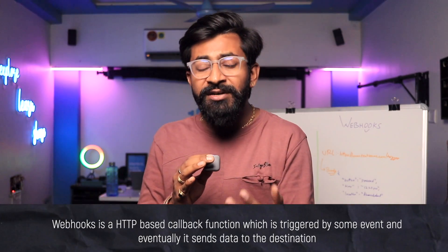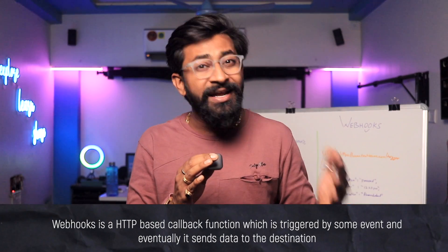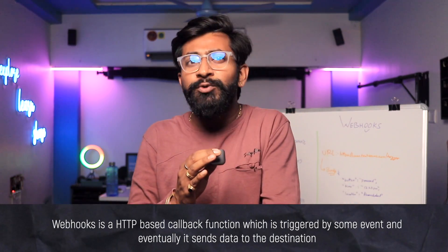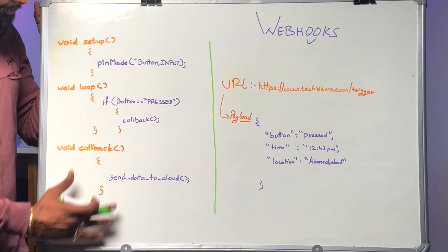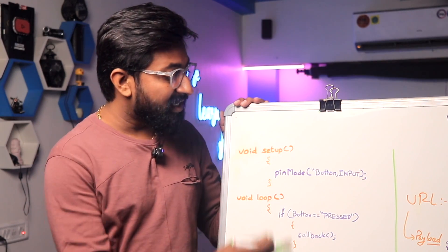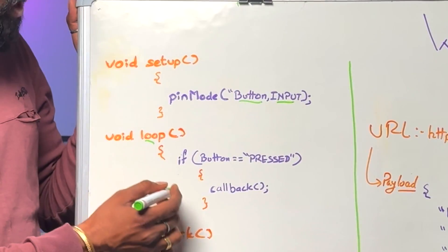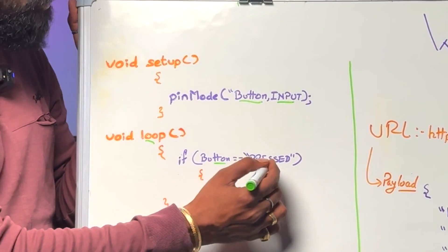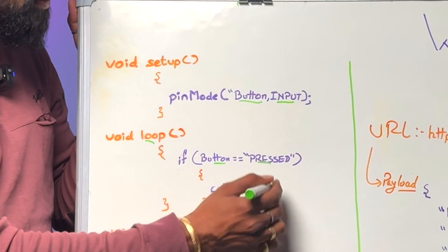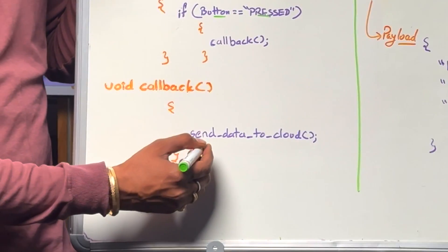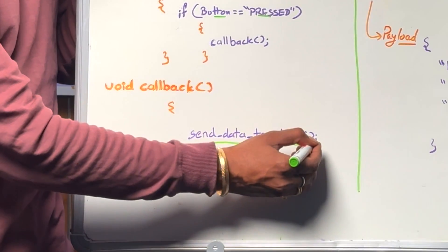Webhooks is an HTTP-based callback function which is triggered by some event and eventually sends data to the destination or client. To explain in simpler terms: here is a basic C++ code where in the setup part I've declared a button as input, and inside the loop I'm checking if the button is pressed — if yes, it calls a callback function which sends data to the cloud.